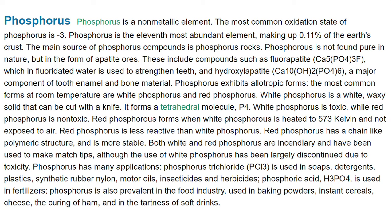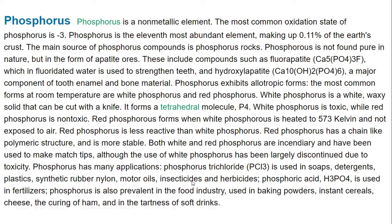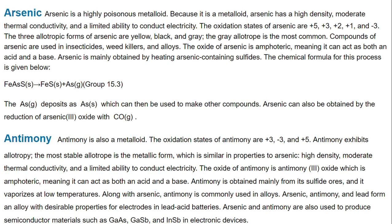Phosphorus has many applications. Phosphorus trichloride is used in soaps, detergents, plastics, synthetic rubber, nylon, motor oil, insecticides, and herbicides. Phosphoric acid is used in fertilizers. Phosphorus is also prevalent in the food industry, used in baking powders, instant cereals, cheese, curing of ham, and in the tartness of soft drinks.